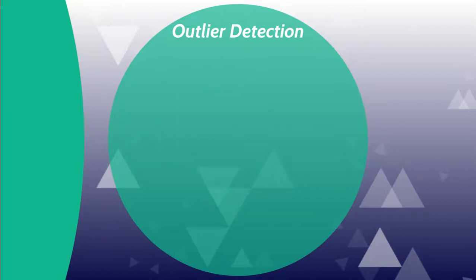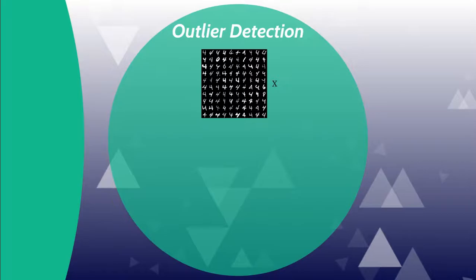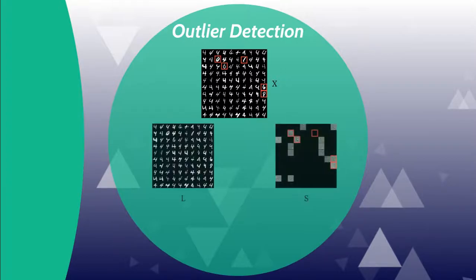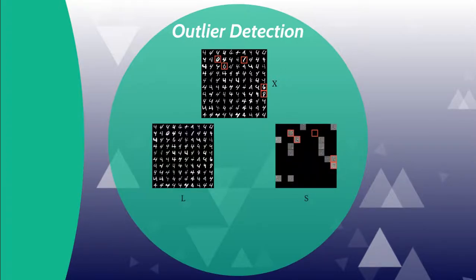For example, our nominal data are pictures of digit 4. Outliers are pictures of other digits. Some instances are hard to reconstruct, and thus robust deep autoencoders isolate them into S, and we consider them as outliers.